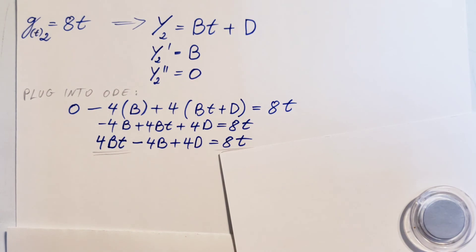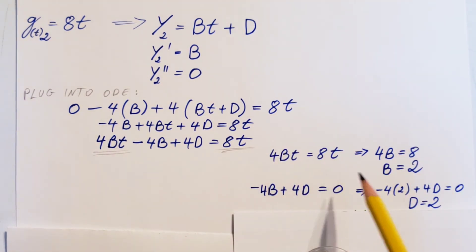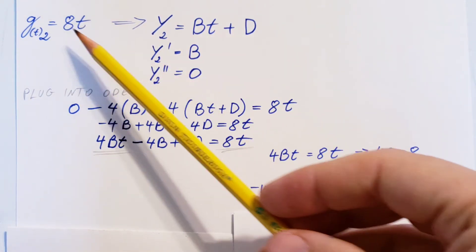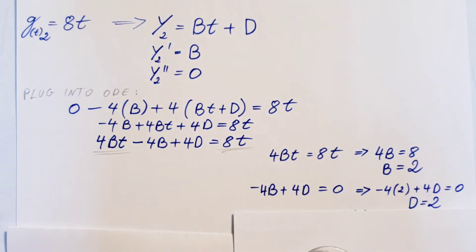We are able to find that B is equal to 2, and D is equal to 2 as well. Now, we're going to come back to our official guess for this term, plug these two in, and we're able to find that our second particular solution is 2t plus 2.